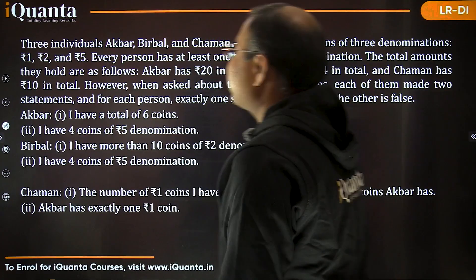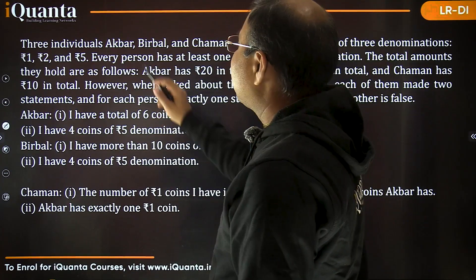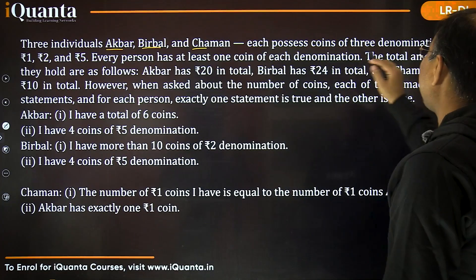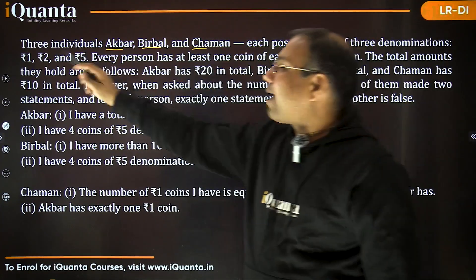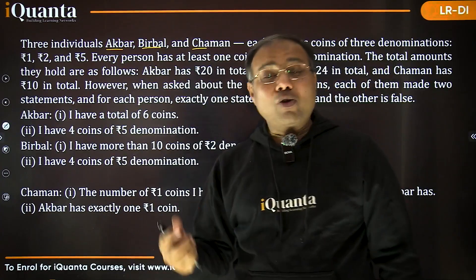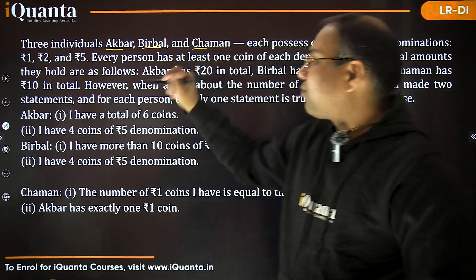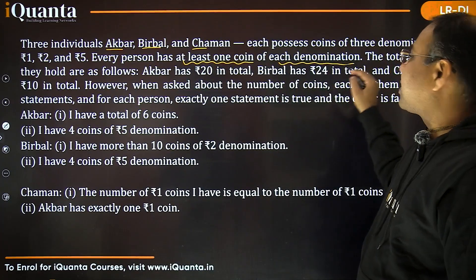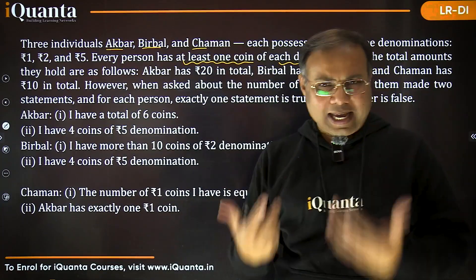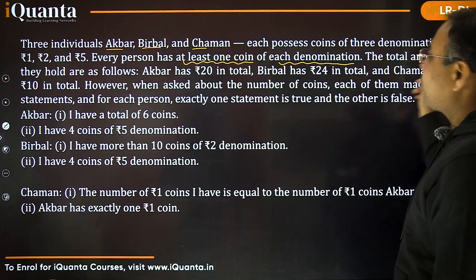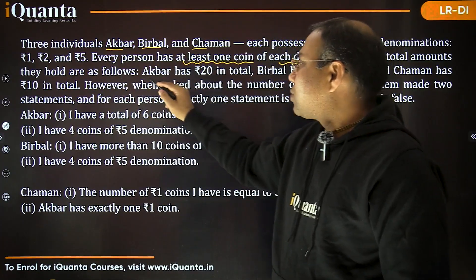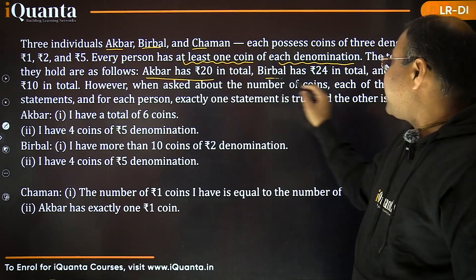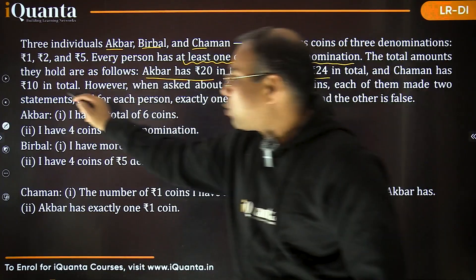Let's read it together. It says three individuals: Akbar, Birbal, Chaman — let's call them A, B, C. Each possesses coins of three denominations: ₹1, ₹2, and ₹5. The total amounts they hold are as follows: Akbar has ₹20, Birbal has ₹24, and Chaman has ₹10 in total.